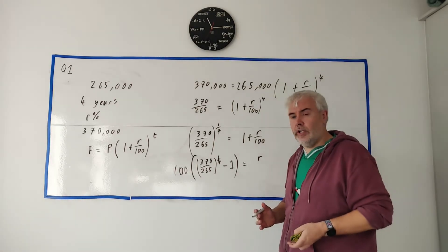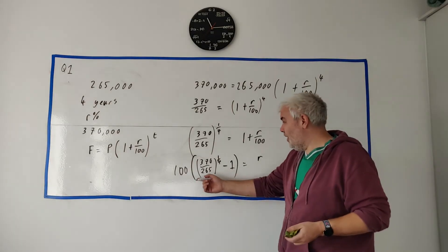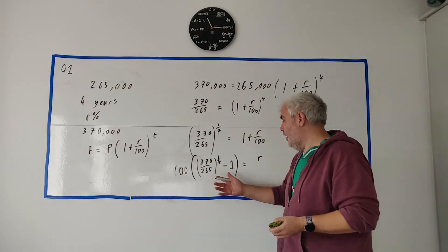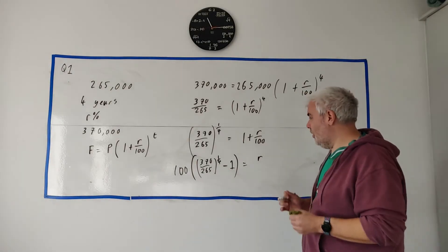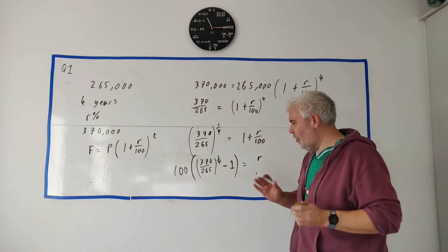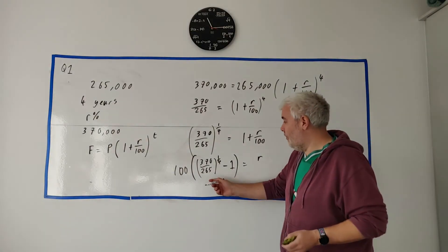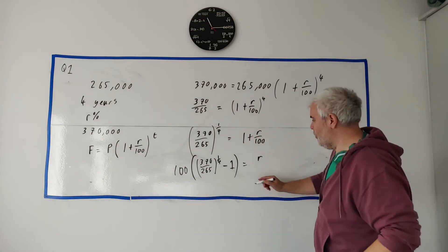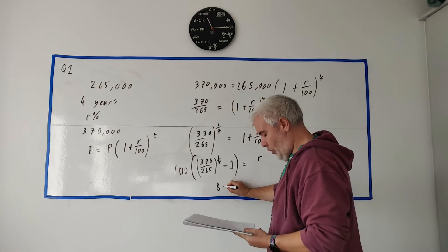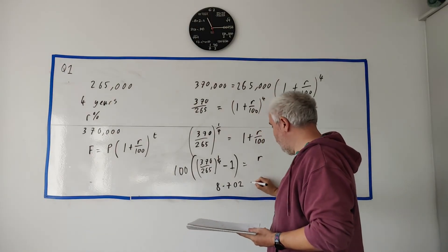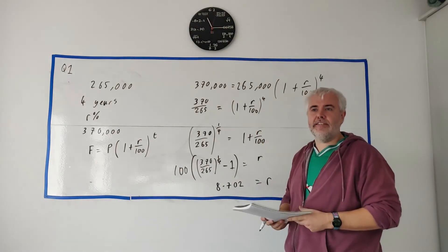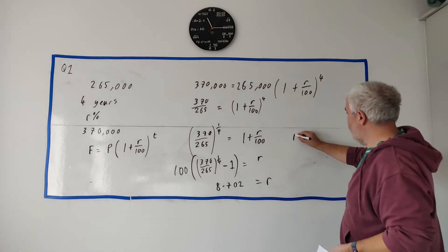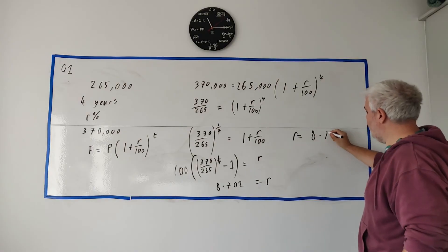If you do everything slowly and steadily you have plenty of time. I have a calculator and I will get something like the left side would be 8.702 is equal to R. Now the question asked give your answer correct to one decimal place. So the answer is R equals 8.7%.